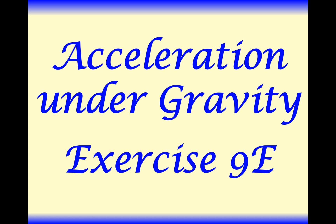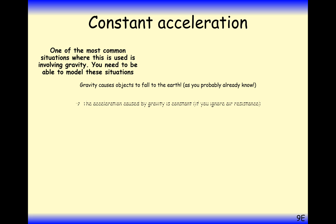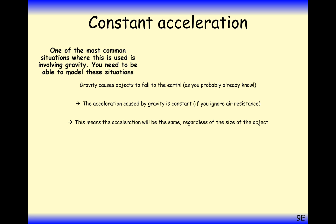We're going to start projecting our particles vertically upwards, and there's a reaction due to gravity that's going to be pulling that particle back down to Earth. Gravity causes objects to fall towards Earth and on any other planet. Acceleration caused by gravity is constant — we're ignoring air resistance at the moment, working with a simple model.